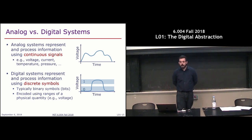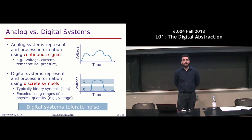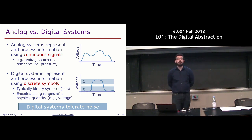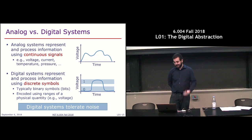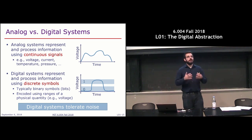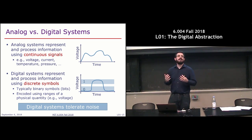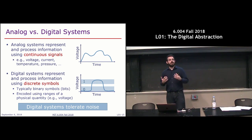The main takeaway point from this lecture is that the key difference between analog and digital systems is that digital systems tolerate noise. The reason digital systems are used practically everywhere and analog systems only in very limited circumstances is this tolerance of noise. Because these systems are robust against noise, we can compose them, build very large systems, and process information reliably at very high speeds.